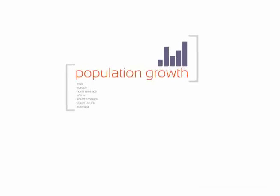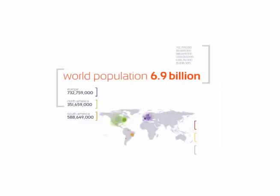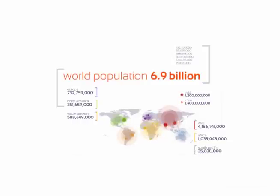Population growth: in 2010, the world hit 6.9 billion people. Europe contains 732 million 759 thousand people, North America 351 million 659 thousand, South America 588 million 649 thousand, Asia 4 billion 166 million 741 thousand people — with India and China boasting the largest populations worldwide. India contains 1.2 billion people, while China beats them at 1.4 billion. Africa has 1 billion 33 million 43 thousand people, and finally the South Pacific at 35 million 838 thousand people.